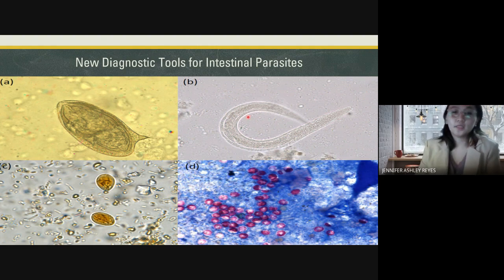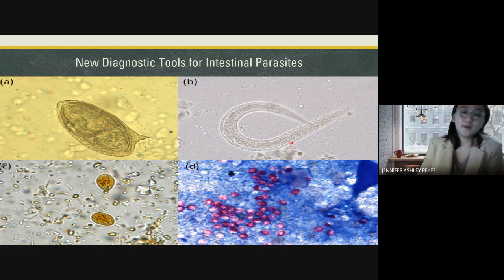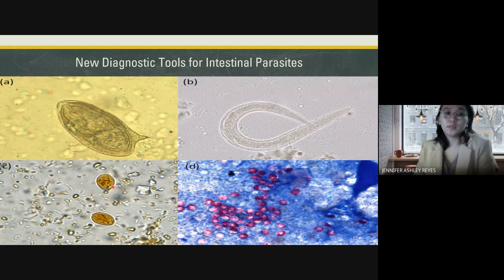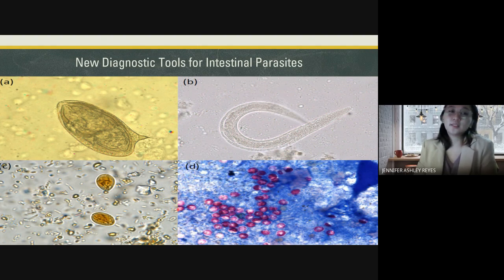Letter B shows an L1 stage larvae of Strongyloides stercoralis — we prefer diagnosing Strongyloides by checking for larvae in the stool. Then there are Giardia cysts, which appear amber in color because of the iodine stain in the iodine stain smear. And letter D shows oocysts of Cryptosporidium, which we detect through a modified acid-fast stain smear.